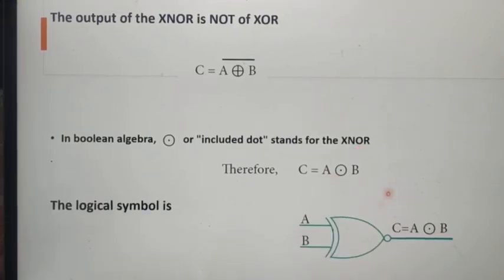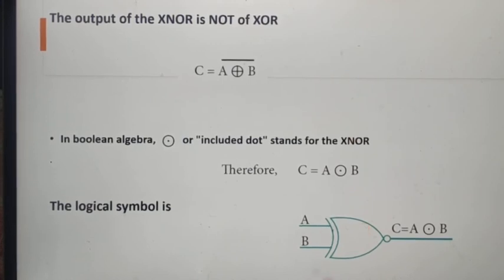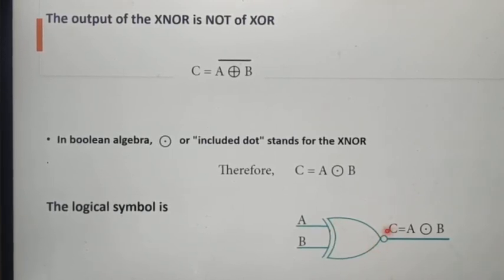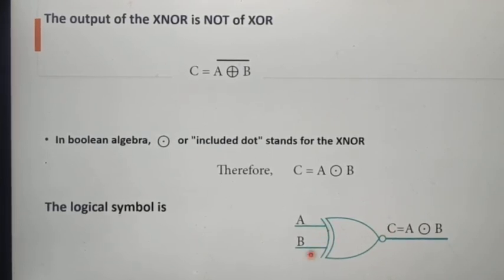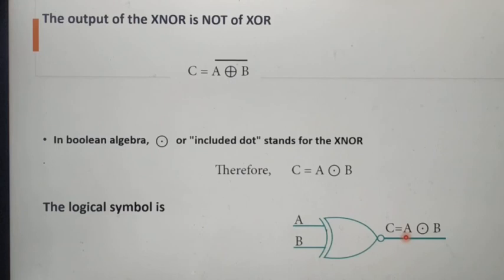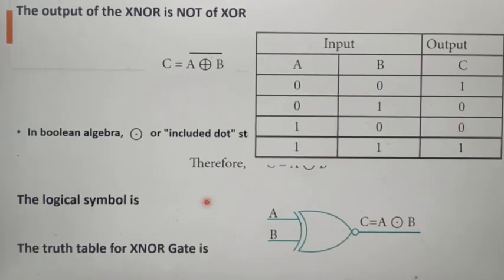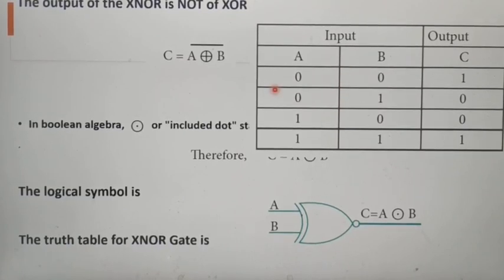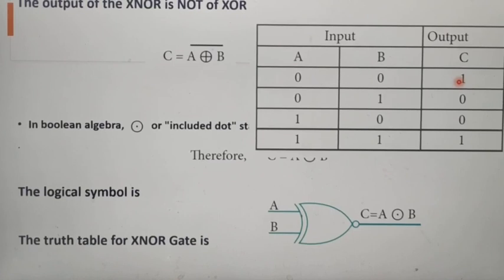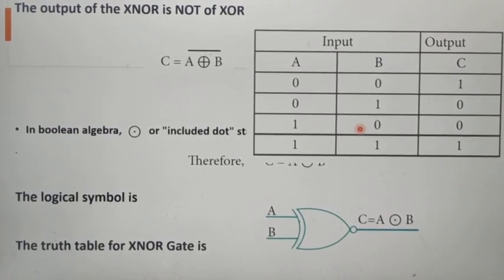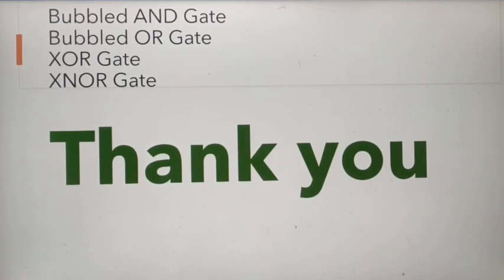Next we can see the logical symbol of the Exclusive NOR Gate or XNOR Gate. This is the logical symbol for XNOR Gate — it is the Exclusive OR gate symbol with a bubble. That bubble represents the inversion. Here A and B are both inputs, and output C equals A ⊙ B or C equals A Exclusive NOR B. In the truth table for Exclusive NOR Gate, if both inputs are the same (00 or 11), our output will be true (1). If both inputs are different (01 or 10), our output will be false (0).